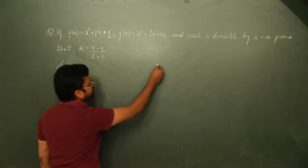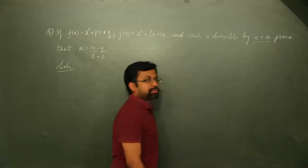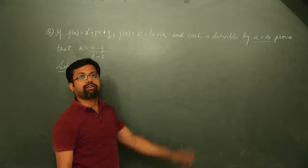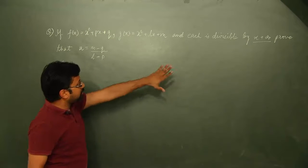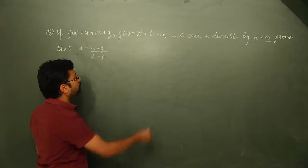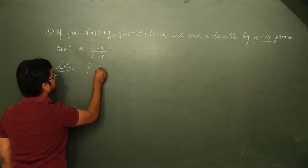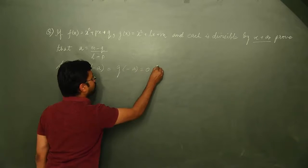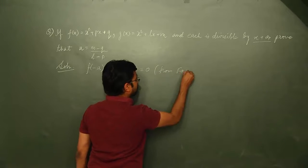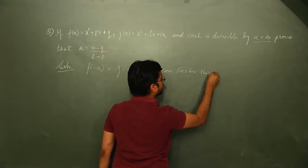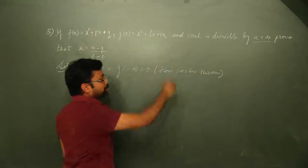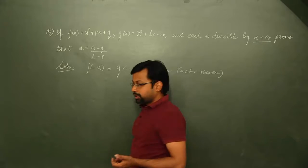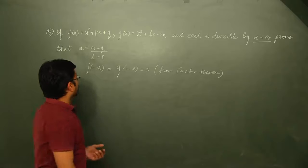Since it is given that f(x) and g(x) are both divisible by x plus a, which means x plus a is a factor of both. If x plus a is a factor of both, therefore, f(minus a) equals g(minus a) equals 0 from factor theorem. That is what the factor theorem was, right? If a polynomial is divisible by a given linear polynomial x plus a, then f(minus a) would be 0.